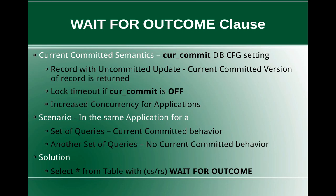Let's say if there is application one which is trying to access a record in a table, and it is performing some update and has still not committed the transaction — so there is a record in a table with an uncommitted update. Under that situation, if another application is trying to access the same record and current committed behavior is enabled, instead of waiting for the lock to be released, it will wait for the other transaction to either commit or rollback.